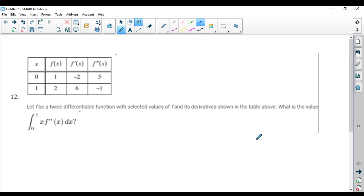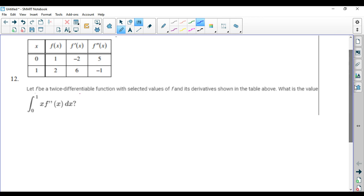We're getting a table of values. Given that f is a twice differentiable function, we have to calculate this definite integral. You'll see that it's x times f double prime of x. So that's a good candidate for parts because it's a product.